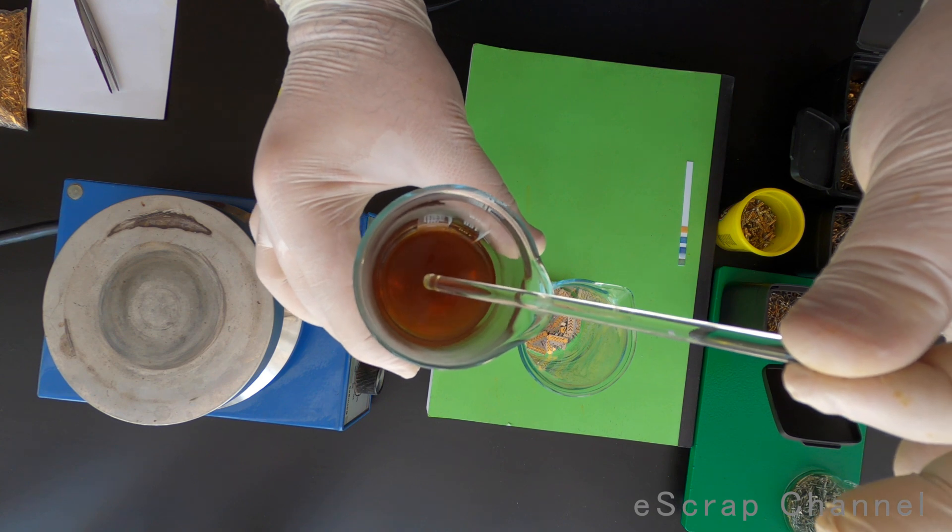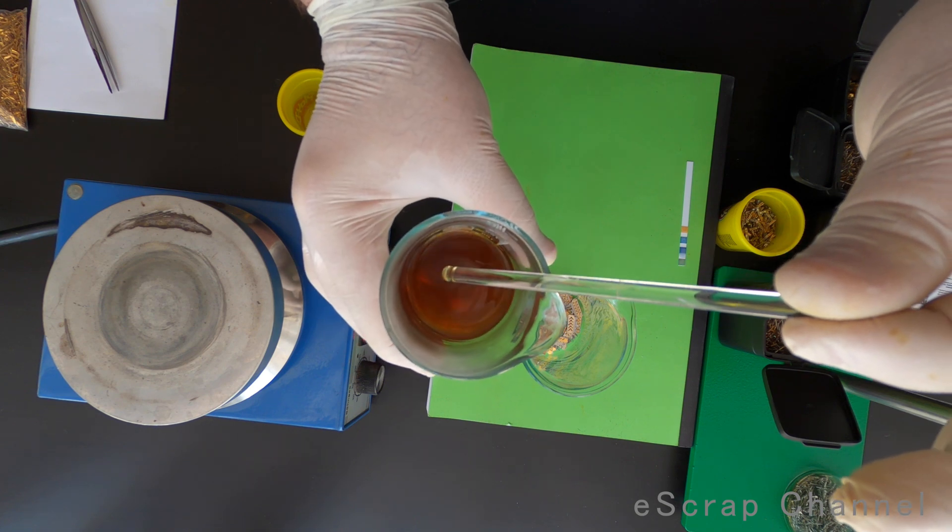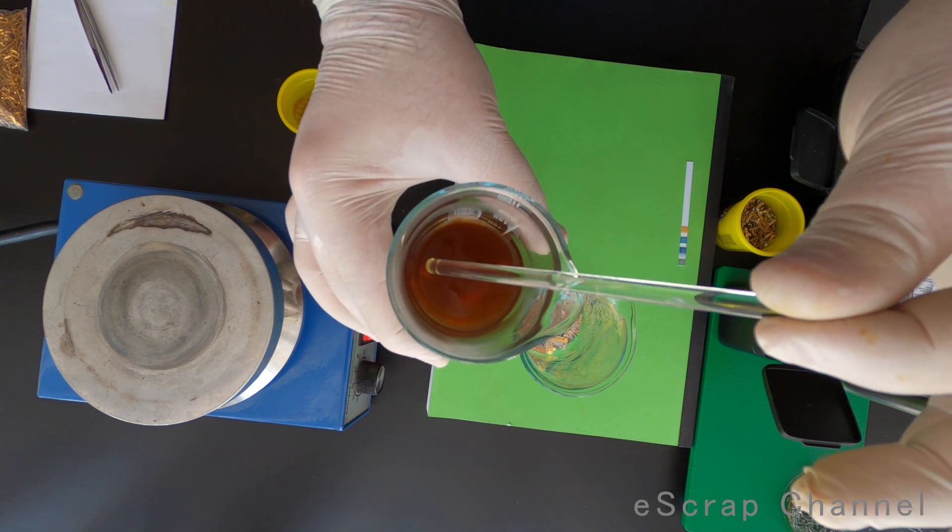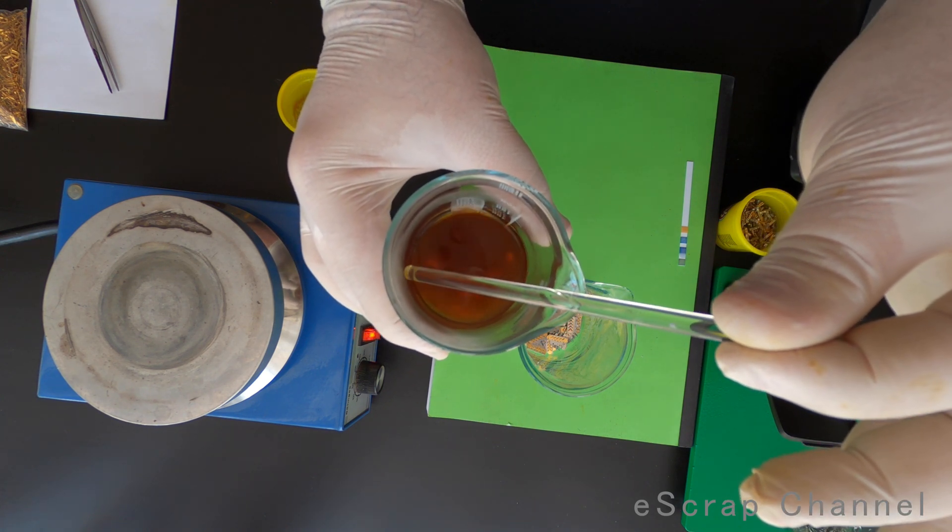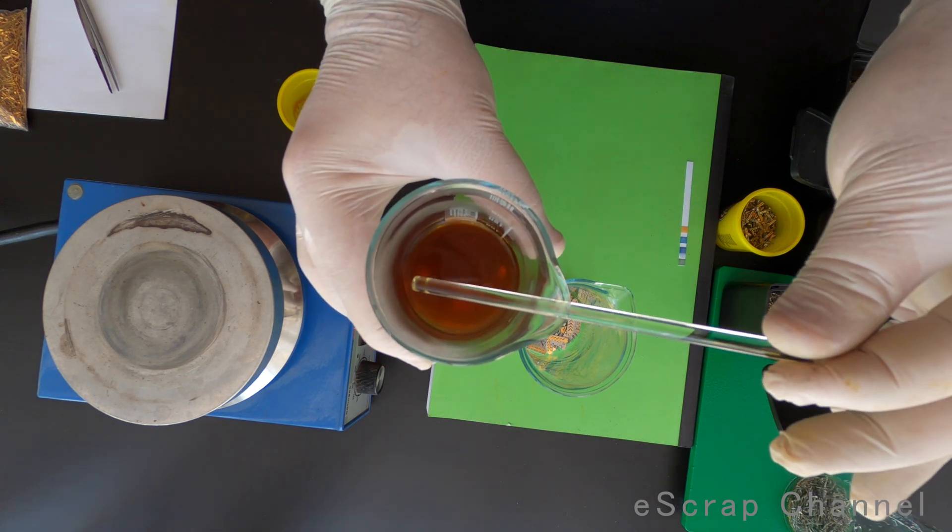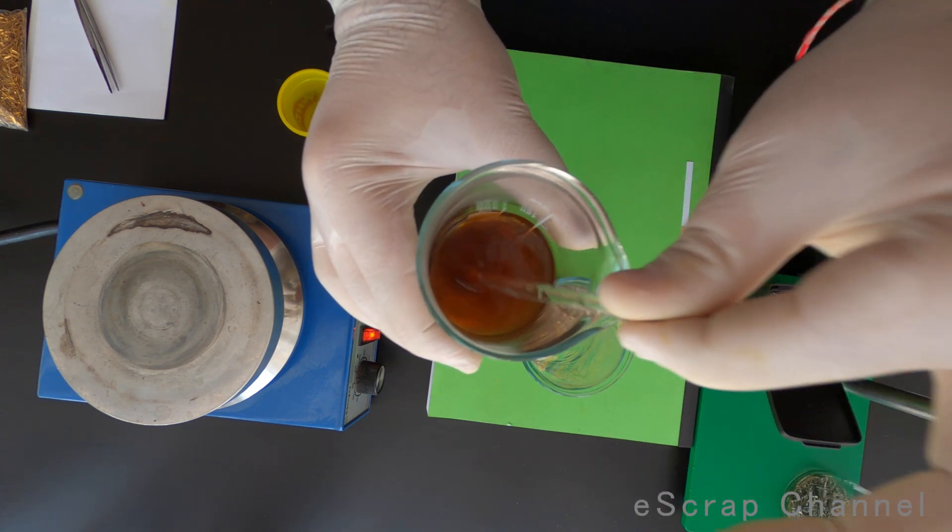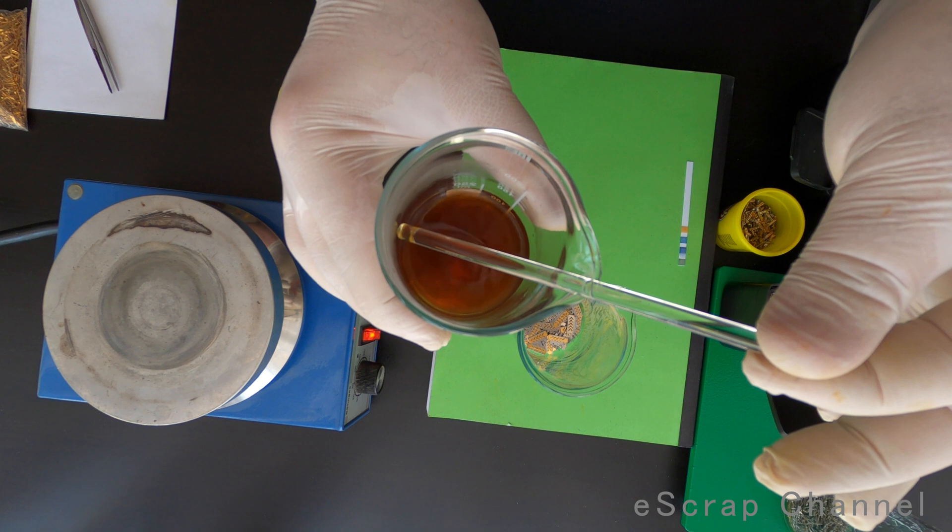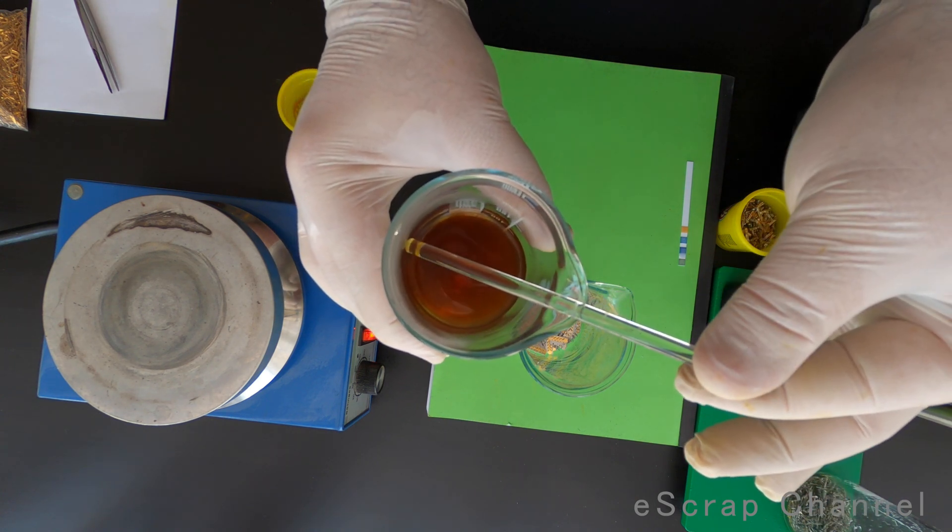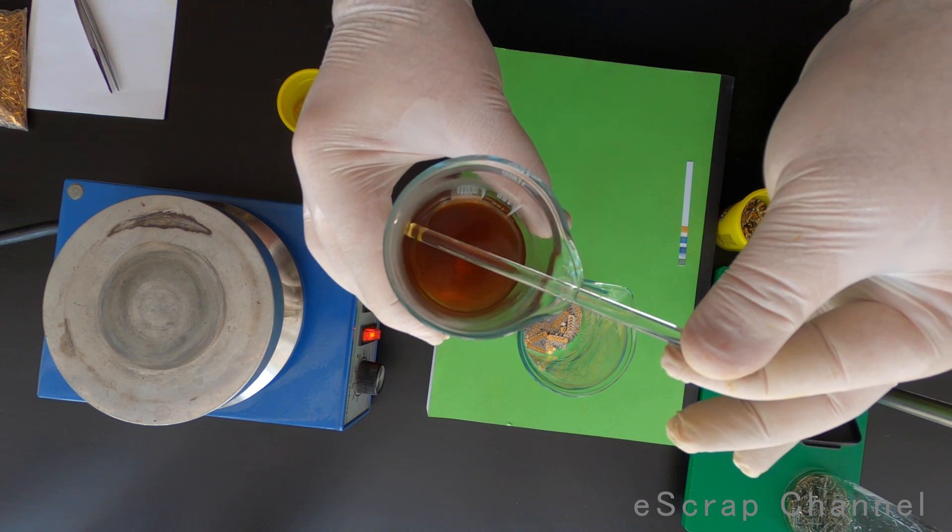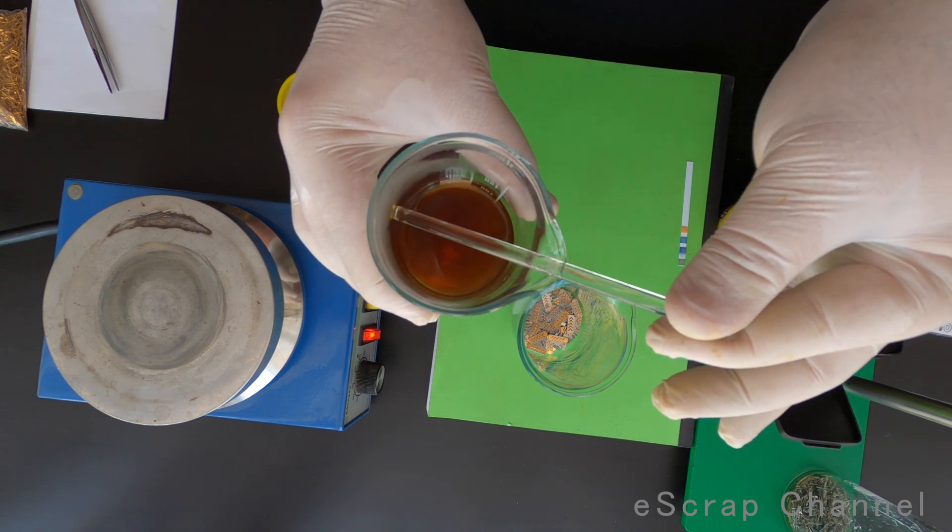If I can recommend you something, please always separate your pins when you collect them from the electronics. Because in this solution now, I have pins that have different thickness of the gold plating and they dissolve with different speed. So some of them are already white, some of them still have some gold on them. It's a little bit not efficient process to mix the pins. Usually I separate them in small bags. And when I process them, I process them in batches.